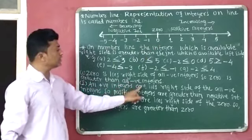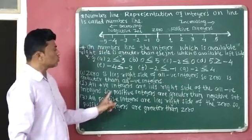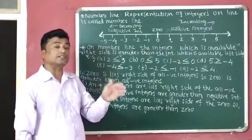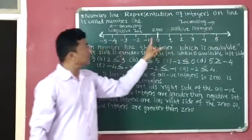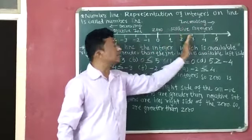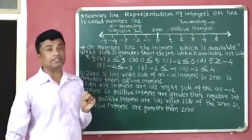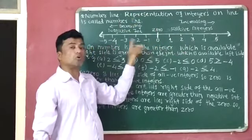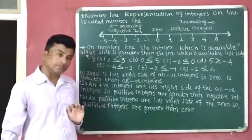Point number two: all the positive integers lie on the right side of all negative integers, so positive integers are greater than negative integers. Because all positive integers are available on the right side of all the negative integers, all positive integers are greater than all negative integers.